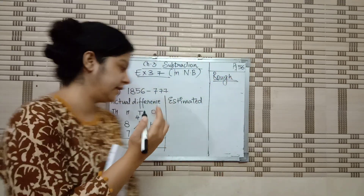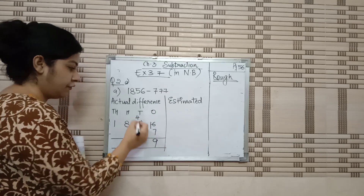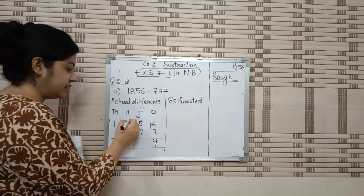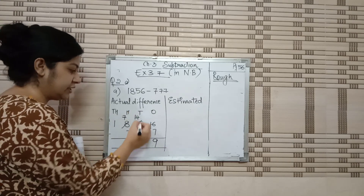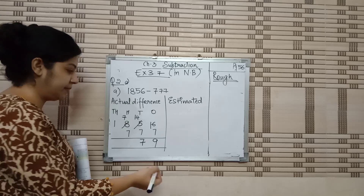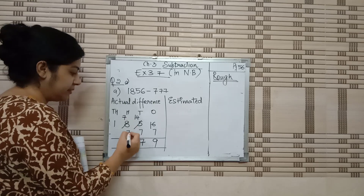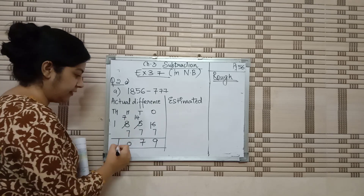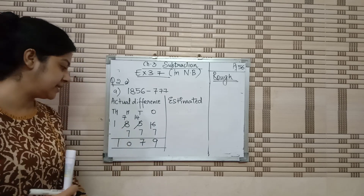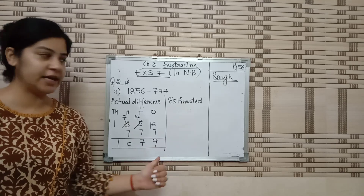After borrowing, at the next column 4 minus 7 is not possible, so we borrow again. 14 minus 7 is 7. Then 7 minus 7 is 0, and 1 remains. So the actual difference answer is 1079.